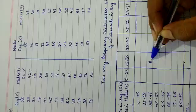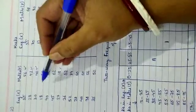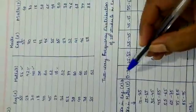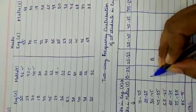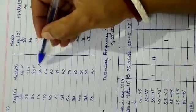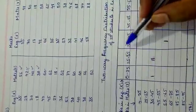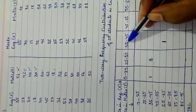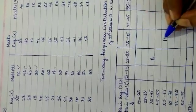Next is X=18 and Y=30. X=18 falls in the 15–25 interval and Y=30 falls in 25–35, so one tally mark there. Then X=40 and Y=60: X=40 falls in 35–45 and Y=60 falls in 55–65, so one tally mark there.